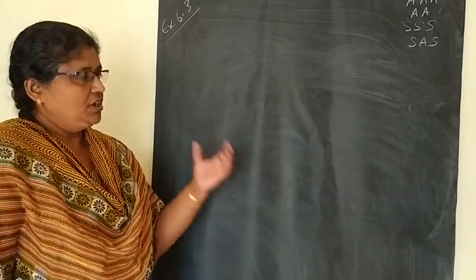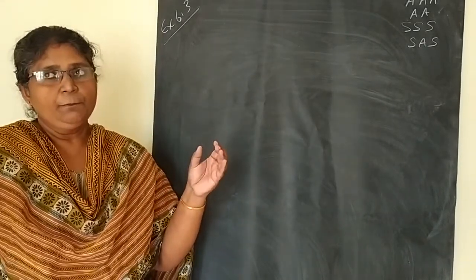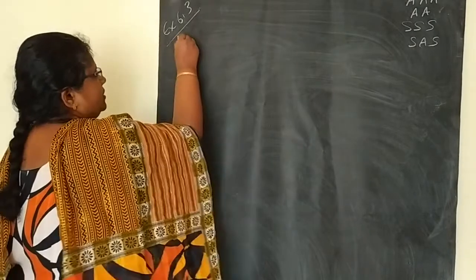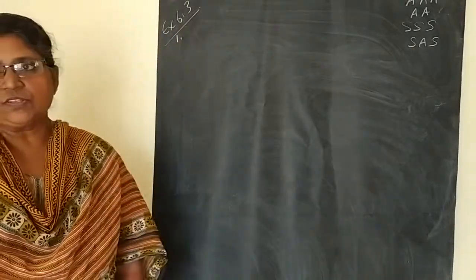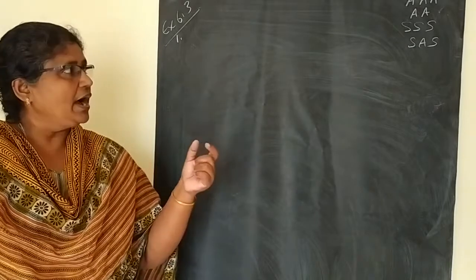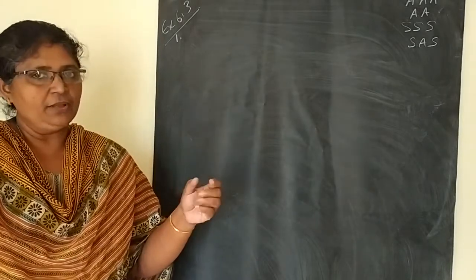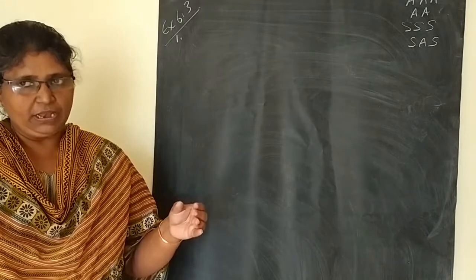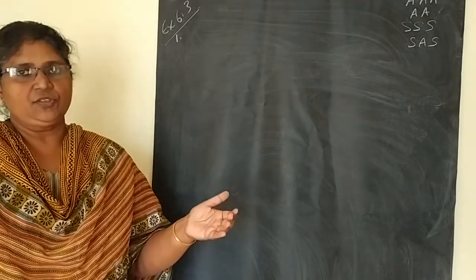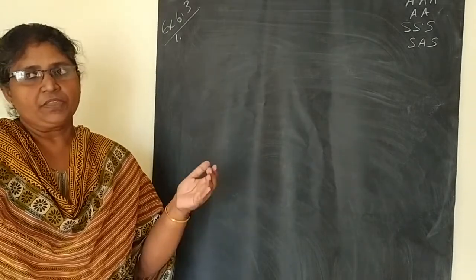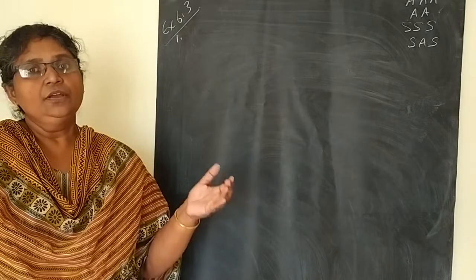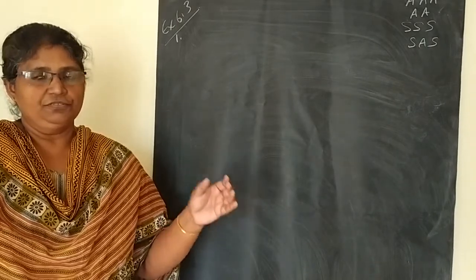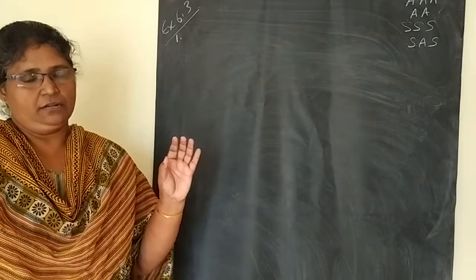So, first question: some pairs of figures are given. You have to identify out of those figures which pairs are similar, why they are similar, and you have to write the symbolic form of the similar triangles.